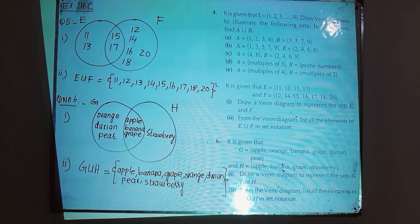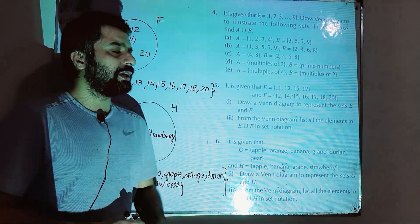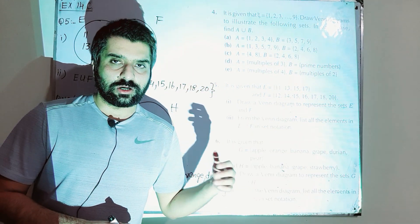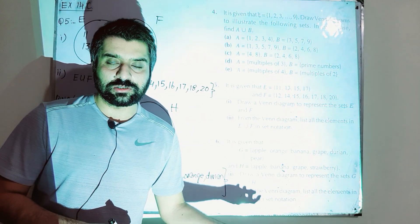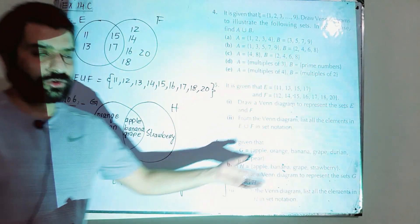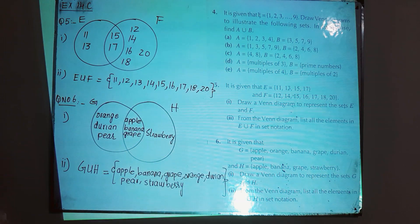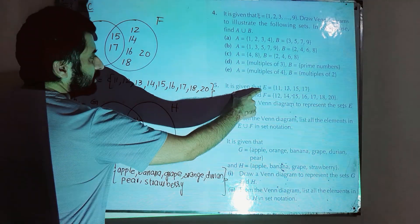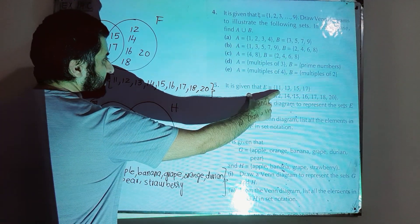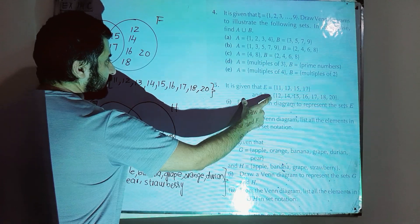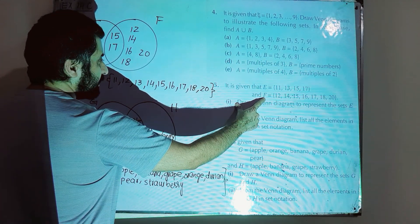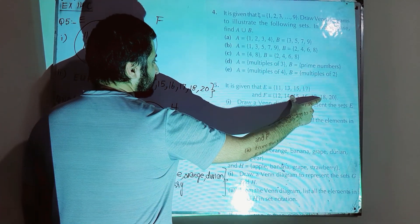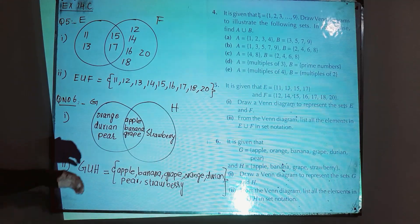Exercise 14C, question number 5 — how to draw a Venn diagram and write down the union of two sets. It is given that E is a set with elements 11, 13, 15, 17, and set F has elements 12, 14, 15, 16, 17, 18, 20.